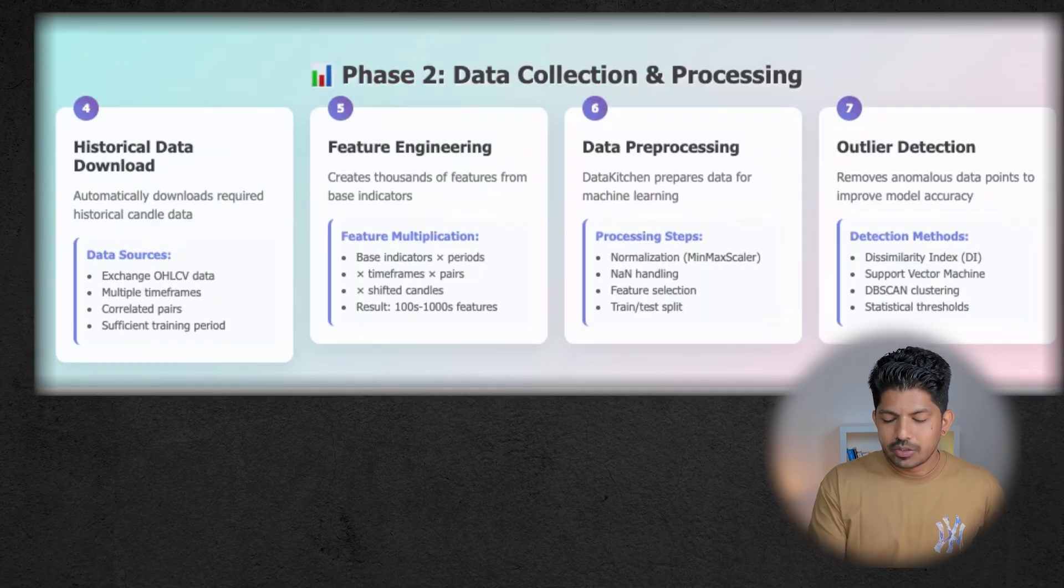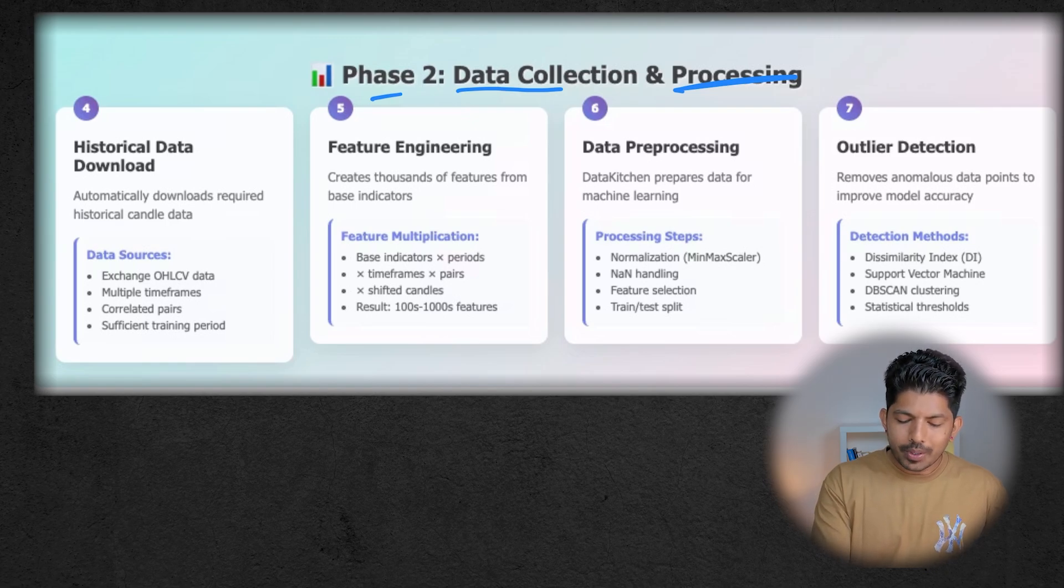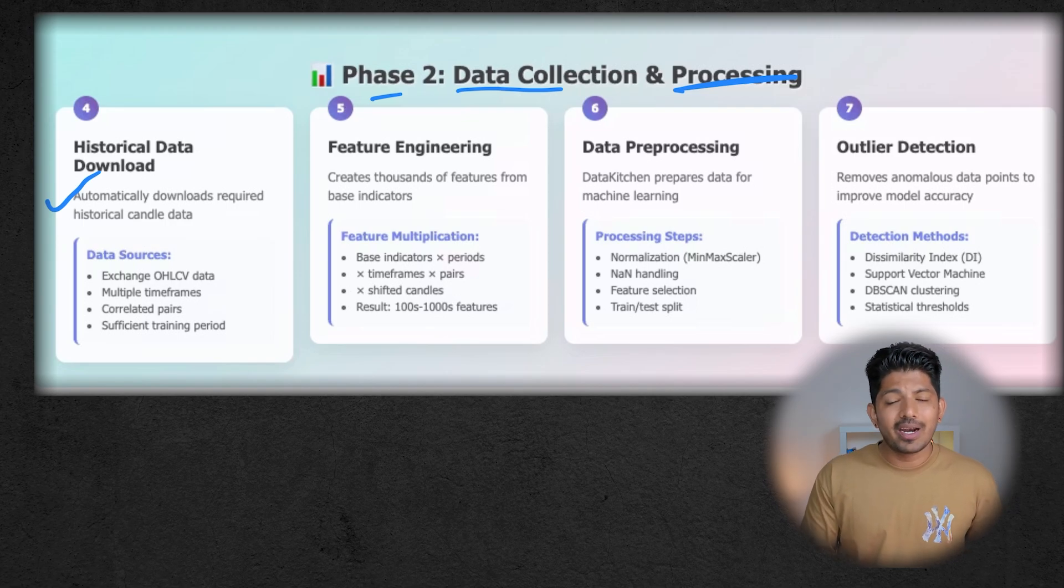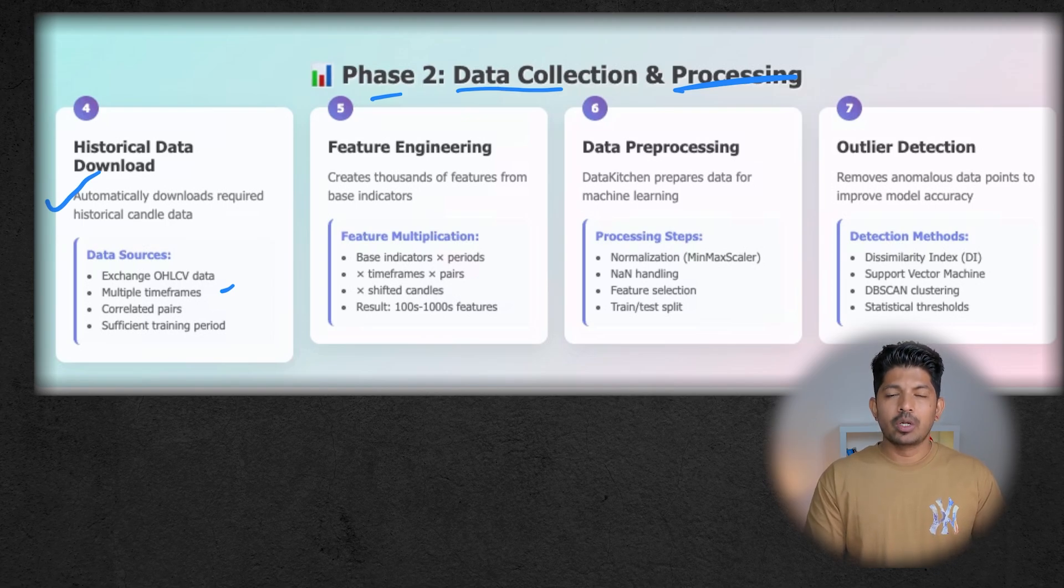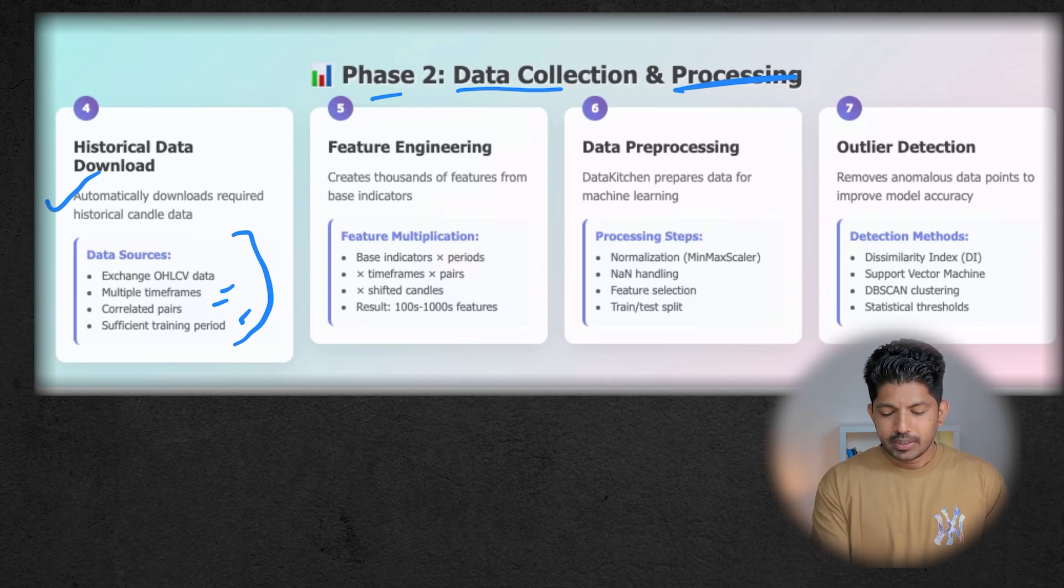Phase 2 is data collection and processing. In this, it will automatically download the required historical candle data—the OHLCV data, open high low close and volume data from any exchange you have mentioned, like if you have mentioned Binance, Bybit, or there are multiple exchanges you can integrate with FreqAI. Then it will select the time frames, whichever you mentioned in the config file. Then it will also download data for the correlated pairs and the sufficient training period. Whatever we have mentioned in the config file, it will download that required data.